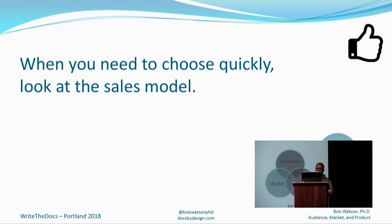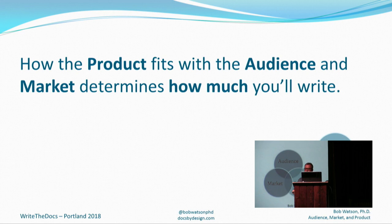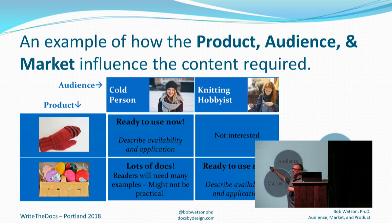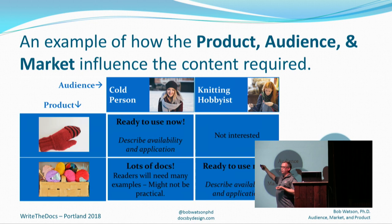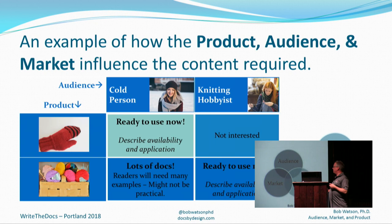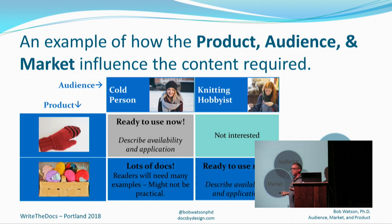And finally there's the product. The biggest impact on documentation is how your product fits with the audience and the market. As an example: my product is a mitten, a ball of yarn, and knitting needles, and my audience categories are the cold person and the knitting hobbyist. To talk to the cold person about mittens, there's not a lot to say — the interface is simple, the application is pretty straightforward — so this is going to be a light documentation load. Trying to sell the mitten to the knitting hobbyist could be more difficult; they might not even be interested because it's already done.